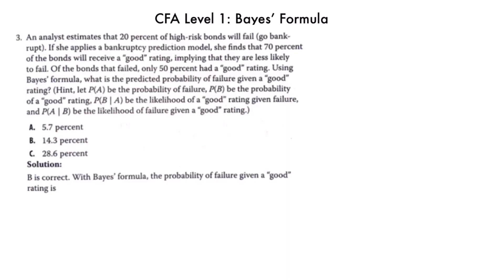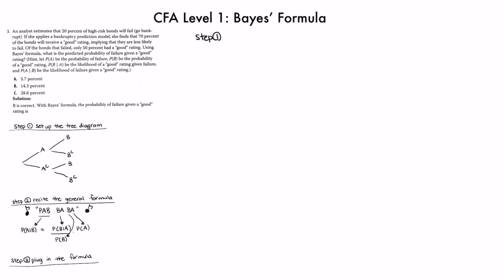Now let's look at CFA Level 1 question set Module 4, Number 3. An analyst estimates that 20% of high-risk bonds will fail or go bankrupt. Applying a bankruptcy prediction model, she finds that 70% of the bonds will receive a good rating, implying they are less likely to fail. Of the bonds that failed, only 50% had a good rating. Using Bayes' formula, what is the predicted probability of failure given a good rating? Step 1 is to draw the tree diagram.